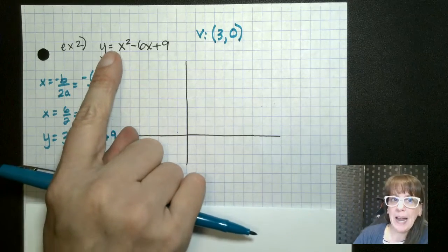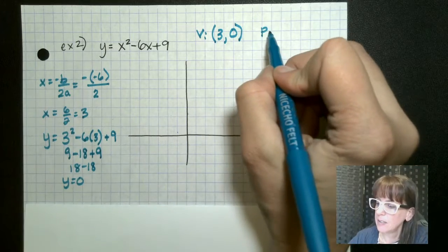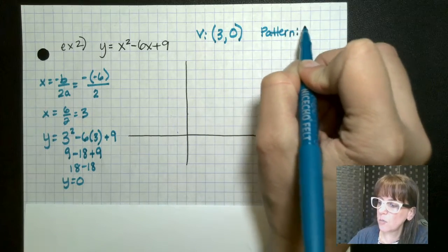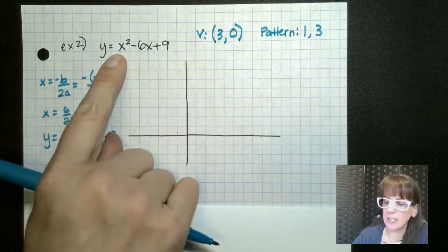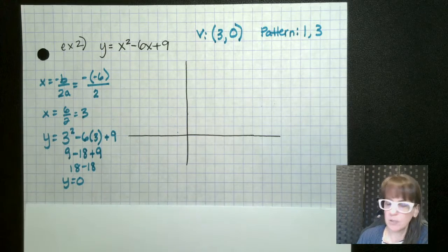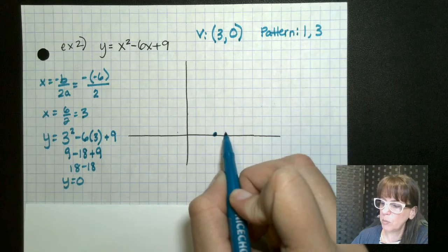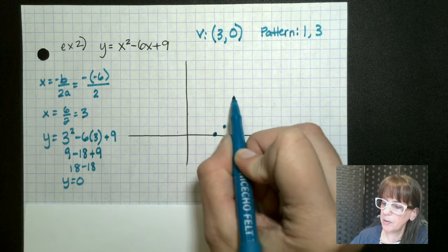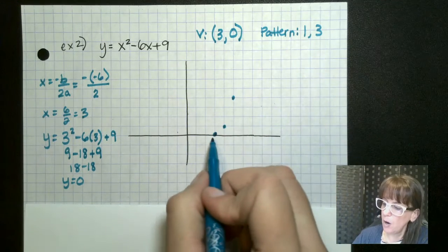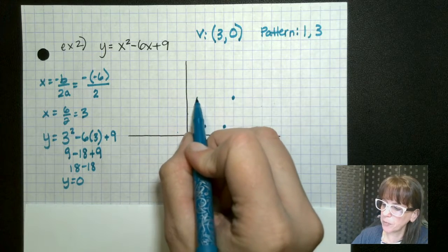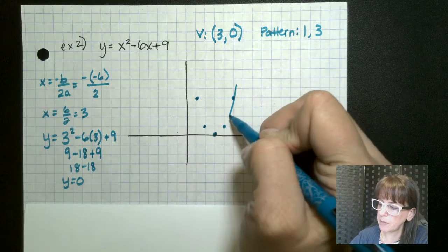Now, looking at this, our pattern is going to be one, three, and it's not going to change because our a is one. So we go over three up zero. And our pattern is over one, up one, over one, up three. And there we go. We've got our parabola right there.